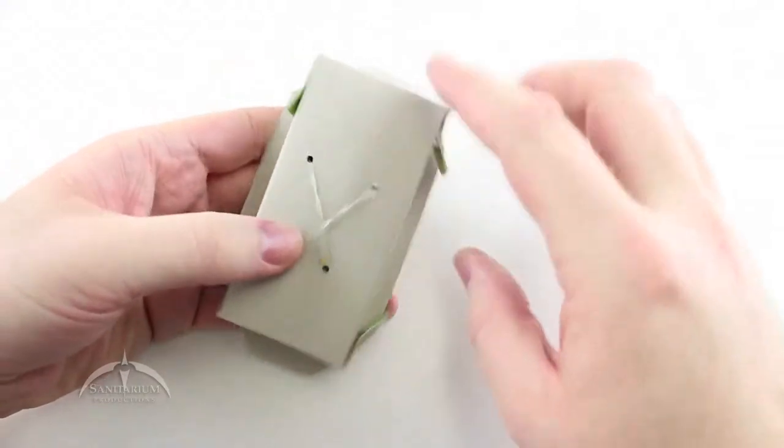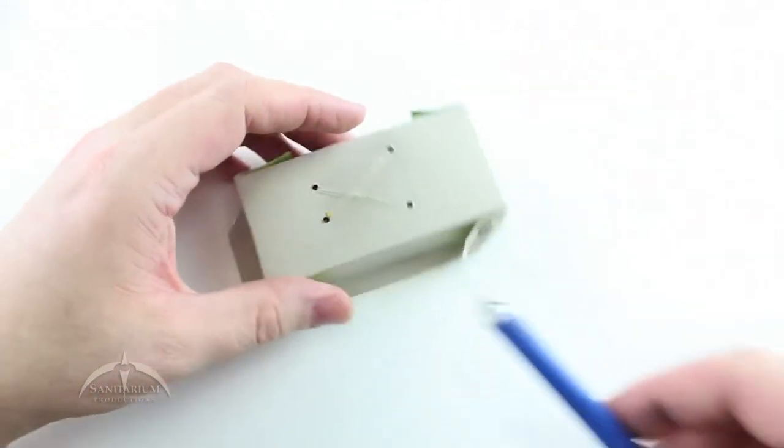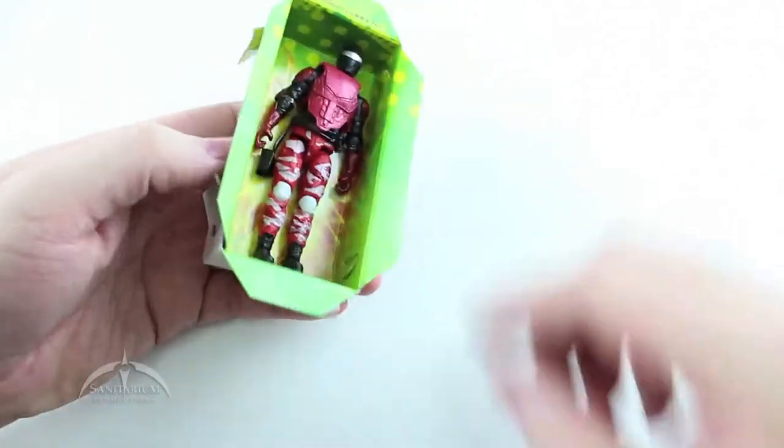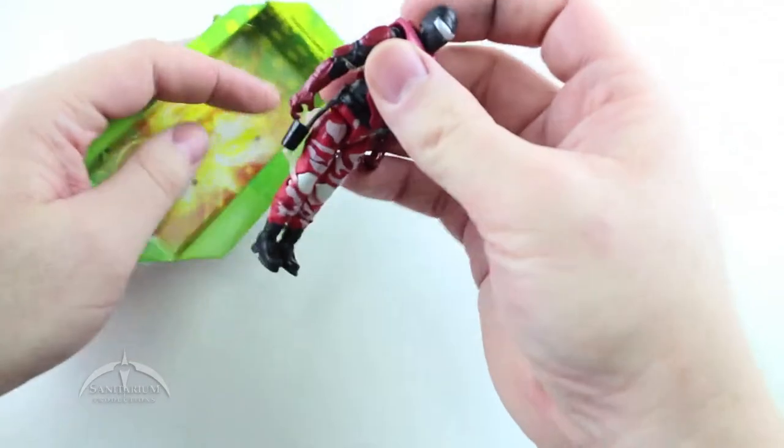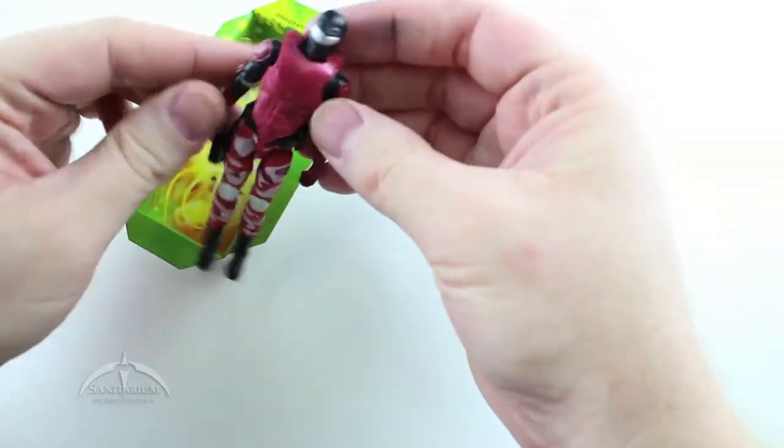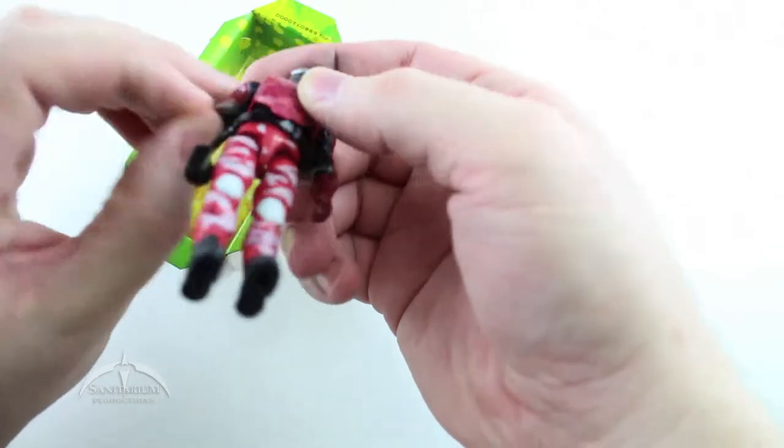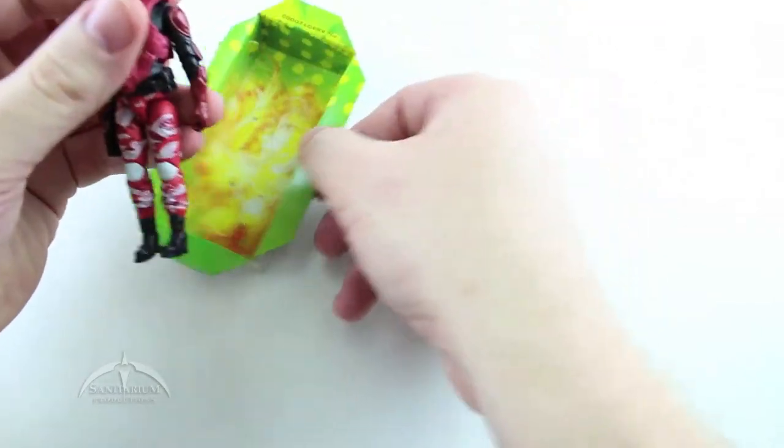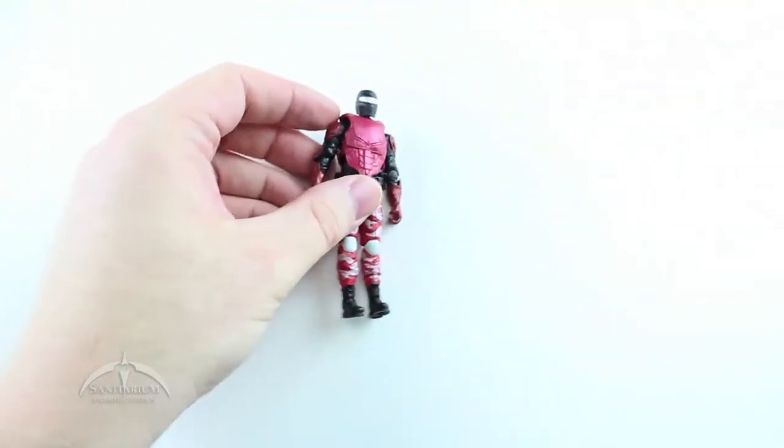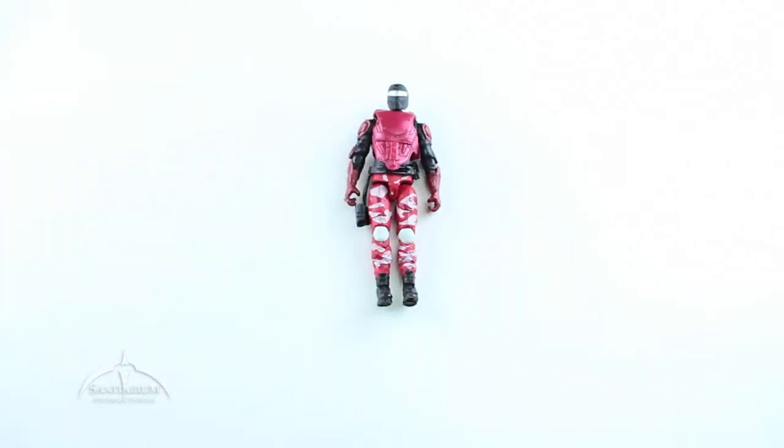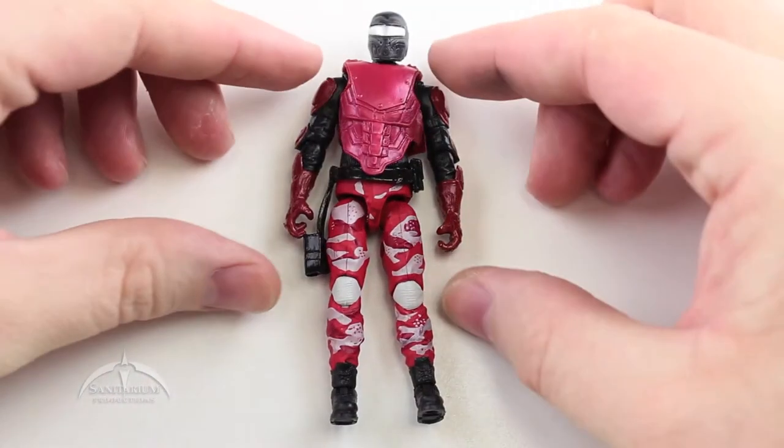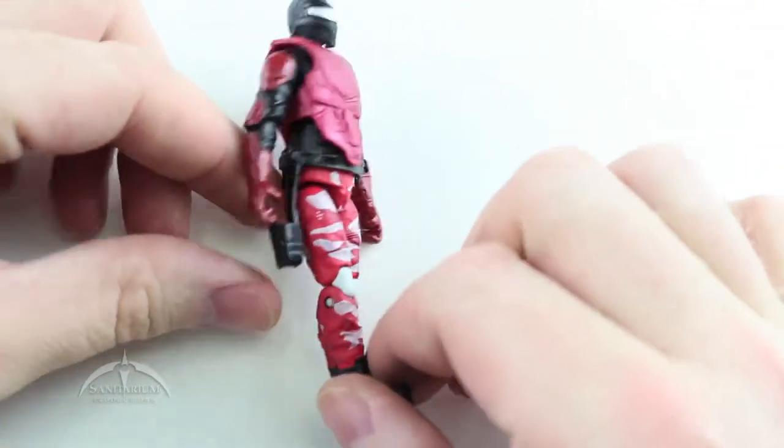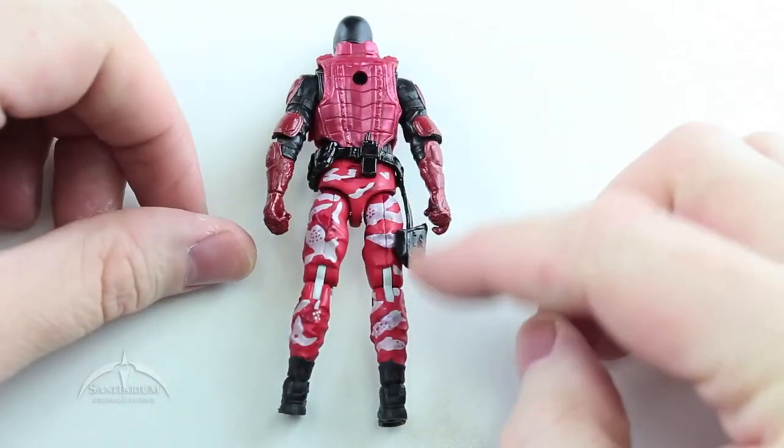Now we're taking a look at the Elite Viper. It's held in place by these rubber bands like we're pretty well used to in all the figures, so just cut those off and the figure should lift out of the packaging very easily. Here's the Elite Viper out of the packaging.